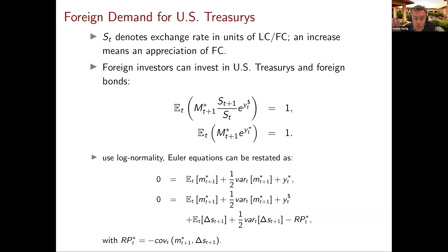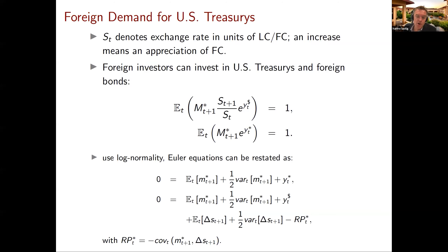Note that the exchange rate plays a prominent role in that first Euler equation. S here denotes the exchange rate in units of local currency per unit of foreign currency, so an increase means an appreciation. We're going to take these two Euler equations and work out the implications for exchange rates. To keep things simple, we'll assume joint log normality of exchange rates and the pricing kernel, with lowercase symbols denoting logs.